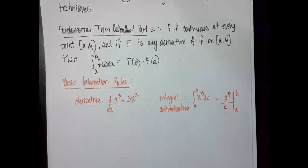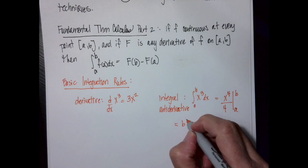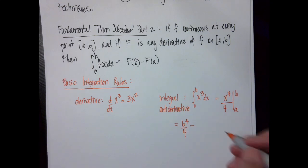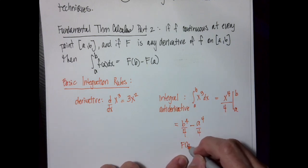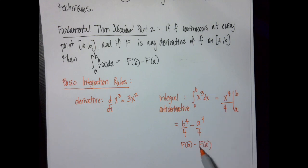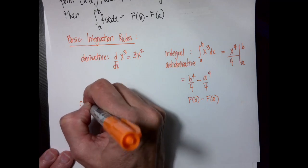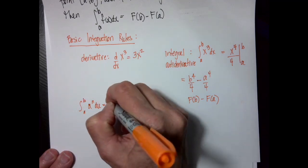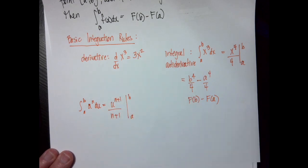I have my evaluation line with top index and bottom index, so this would become b to the fourth over 4 minus a to the fourth over 4. This is what we've been talking about — f(b) minus f(a). Written as a basic rule: the integral from a to b of u to the n du equals u to the n+1 over n+1, evaluated from a to b.